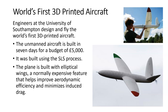The world's first 3D printed aircraft was developed by engineers at the University of Southampton in the UK — basically a remote-control plane. The unmanned aircraft was built in seven days for a budget of 5,000 pounds. It was built using an SLS selective laser sintering process. It has a really cool elliptical wing shape, which is very efficient, and electronics are built into the fuselage to minimize the assembly process.